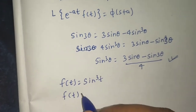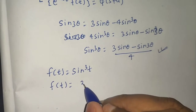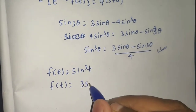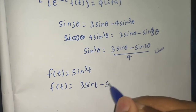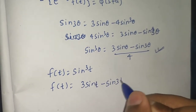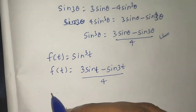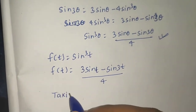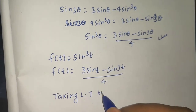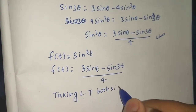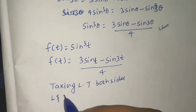So f(t) = sin³(t) can be written as [3·sin(t) − sin(3t)] / 4. Now taking Laplace transform of both sides.